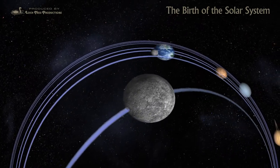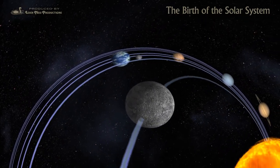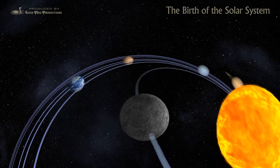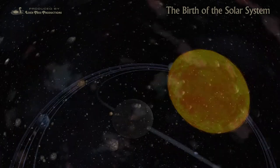The planets move in a stately procession orbiting the sun. But it wasn't always this way.